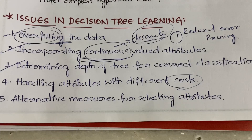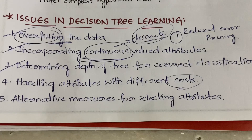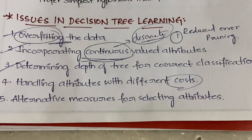These are the issues with decision tree learning. To minimize these issues, we will encounter another algorithm in future chapters of the subject. With this video we are done with all concepts related to decision tree, and from the next video we will start a new topic: neural networks.